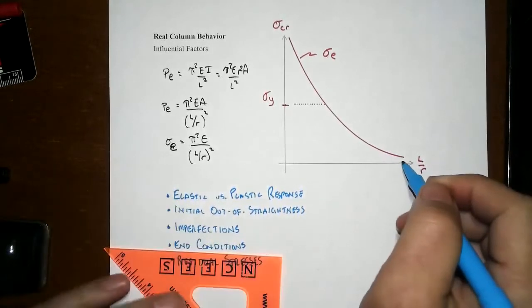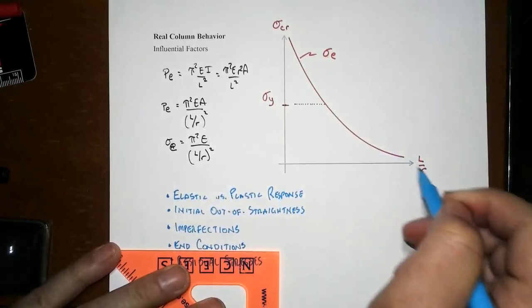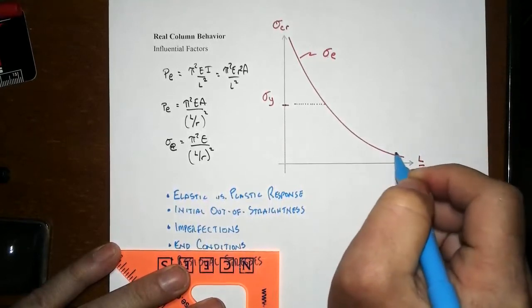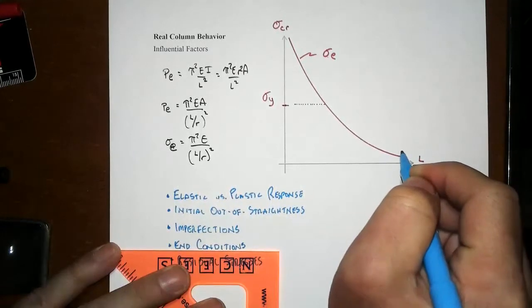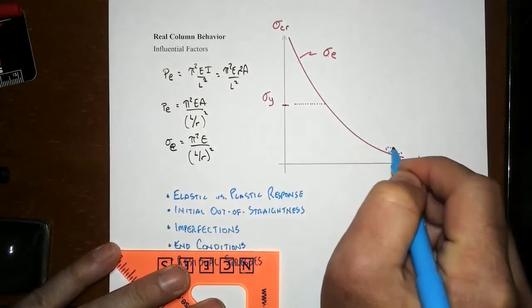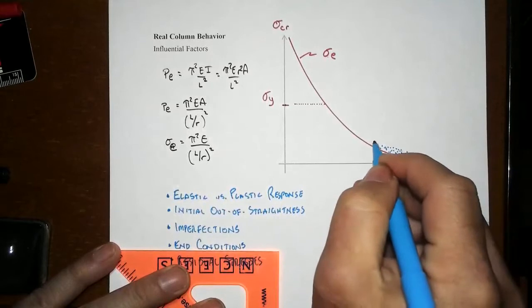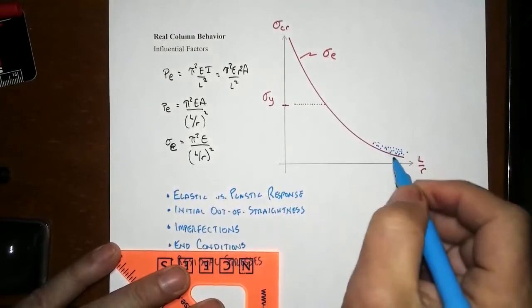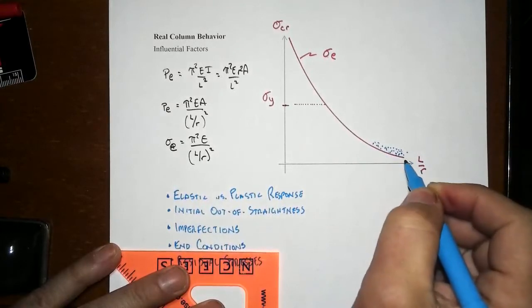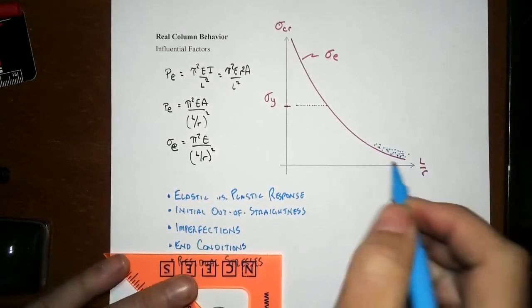If we test a whole range of members and keep the cross-sectional area the same but have different slenderness, you'll find that out in the really skinny, long region, the data will be kind of close. Each dot is a different test. It's going to be pretty close to the Euler model, maybe a little bit above because it's hard to get a perfectly pinned end, sometimes a little bit below because we might have some initial out-of-straightness.